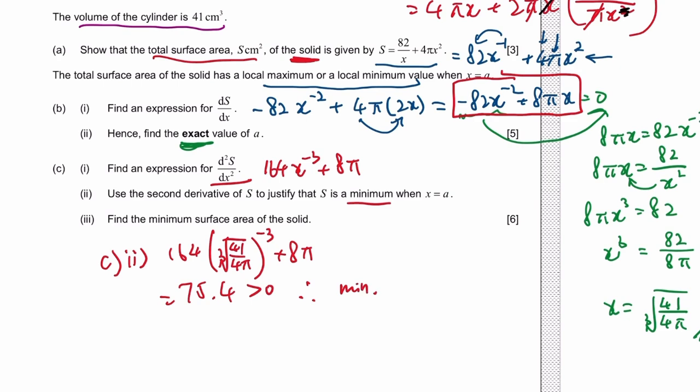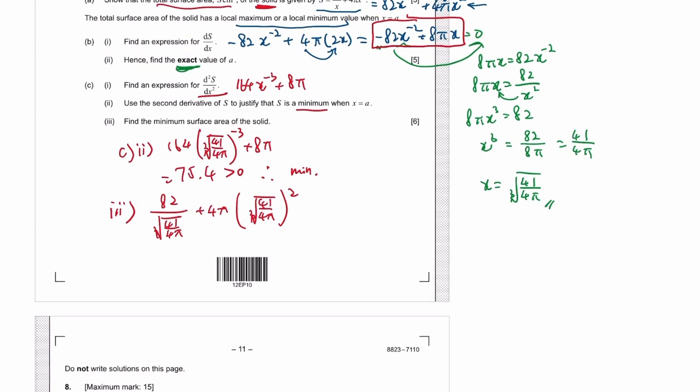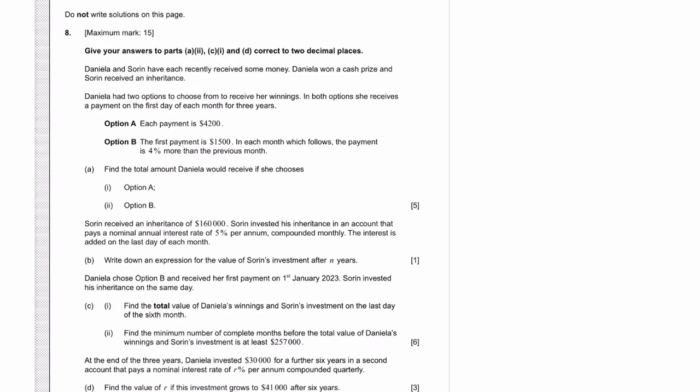Find the minimum surface area of the solid. Just sub in the value. The question is quite straightforward, very typical of an optimization question. Let's move on to question 8.